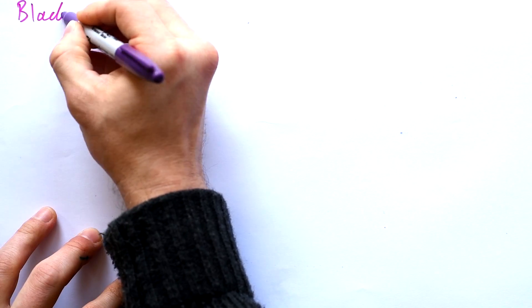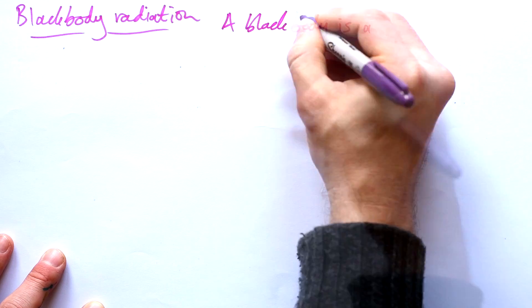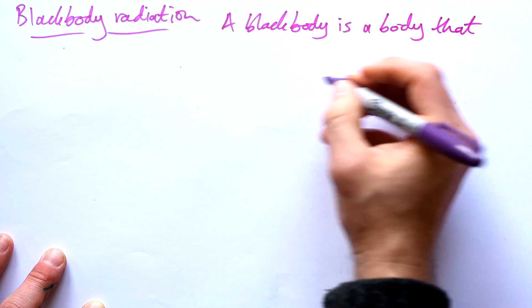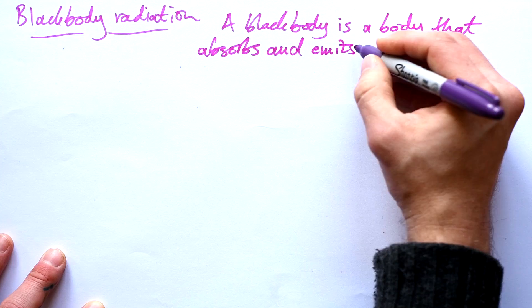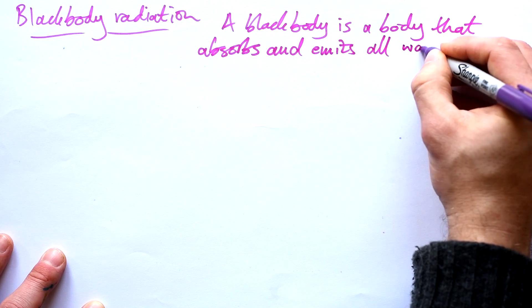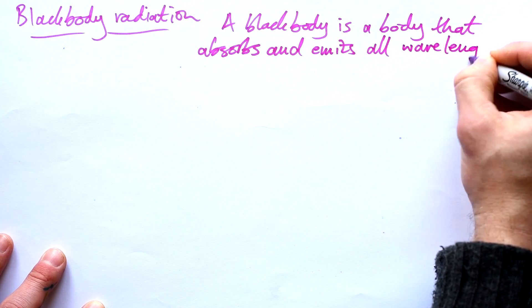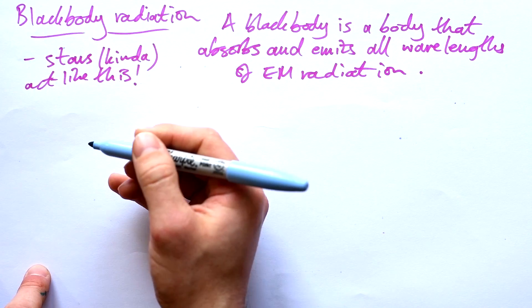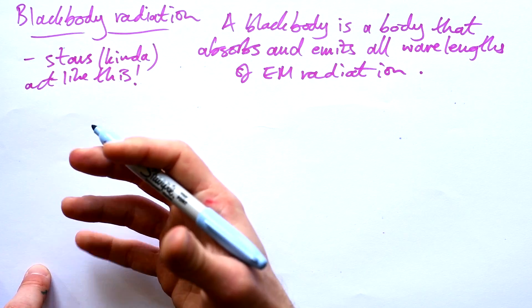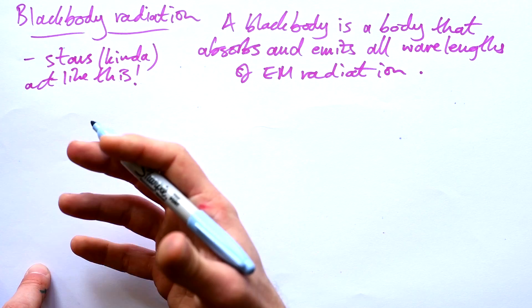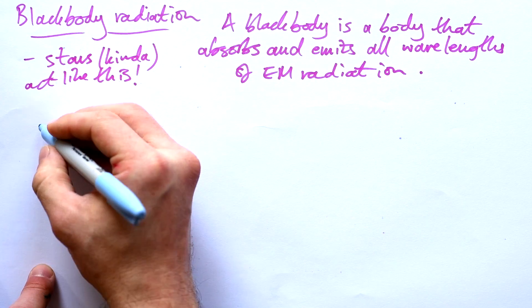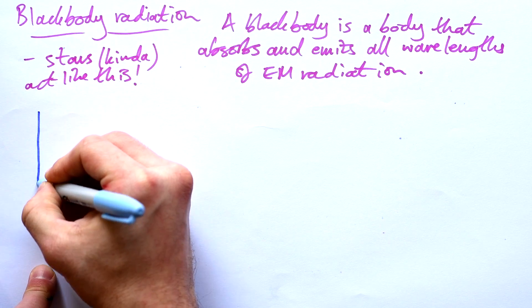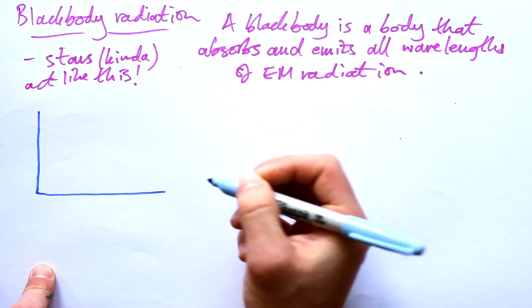Alright, let's talk about black body radiation. A black body is an object, a body that absorbs and emits all wavelengths of EM radiation, but we can approximate stars to this. So we're not talking about something that only emits certain wavelengths, like our emission spectra that we're used to. We're talking about something that theoretically emits a spectrum of wavelengths.